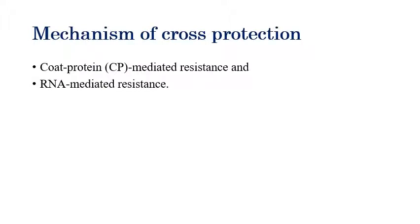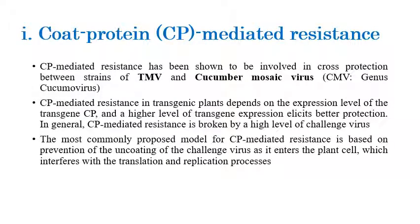There are two main mechanisms involved in cross protection: the first is coat protein-mediated resistance, and the second is RNA-mediated resistance, also called RNA interference. These two mechanisms provide protection in cross protection.